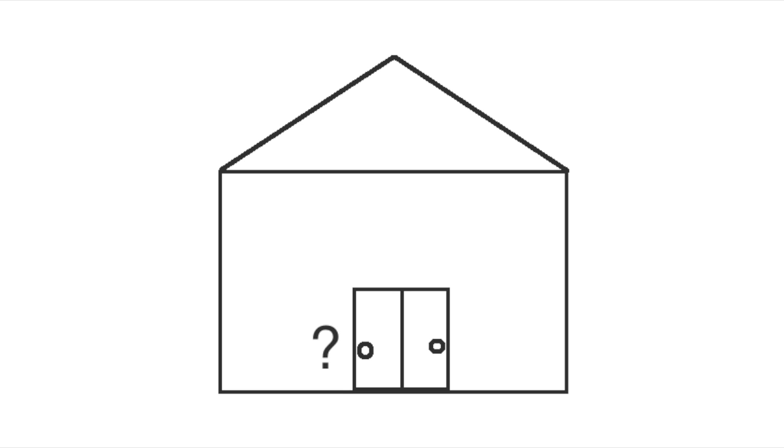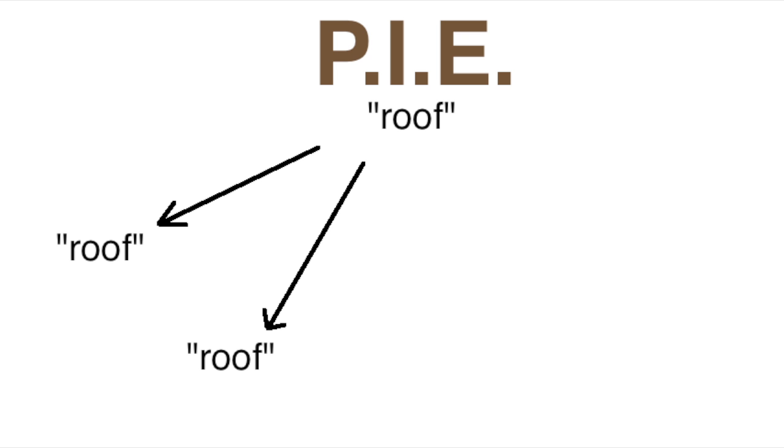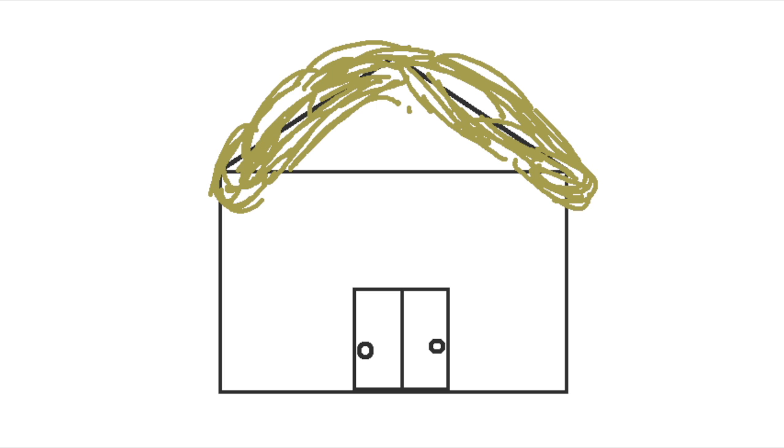Interestingly, they had a word for door, but in the daughter languages, the word door usually comes in the form that words take when you're talking about two of something, which indicates that their doors might have usually come in pairs of two. They definitely had words for houses and buildings, but we don't know much about what they would've been like. We do know one thing about them, though, because their word for roof also became verbs meaning to thatch in some daughter languages, suggesting that they might have tended to have thatched roofs.